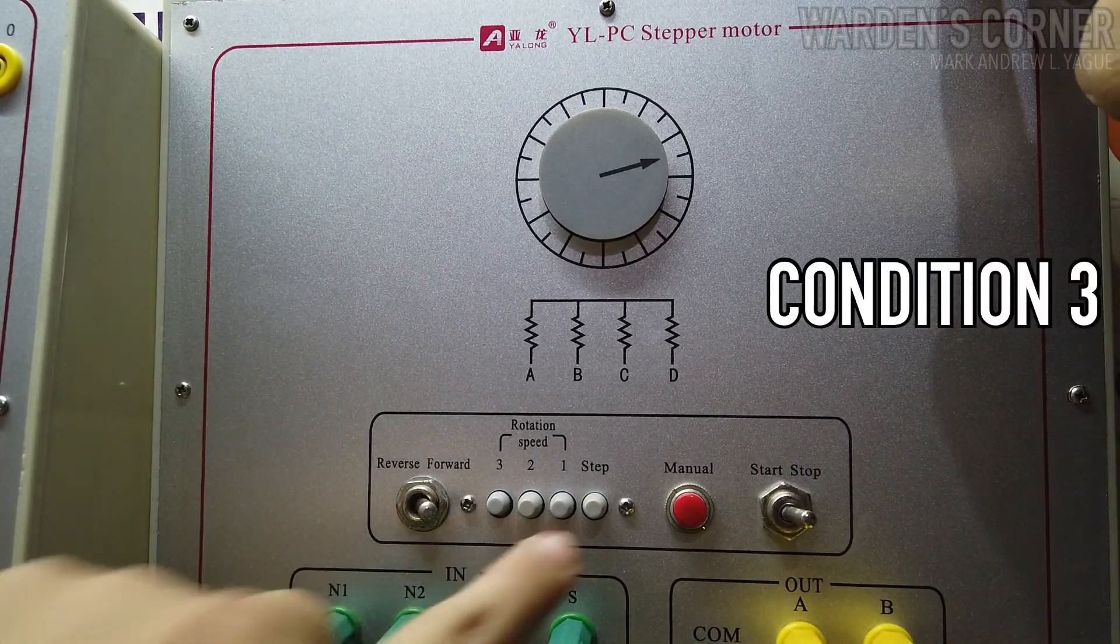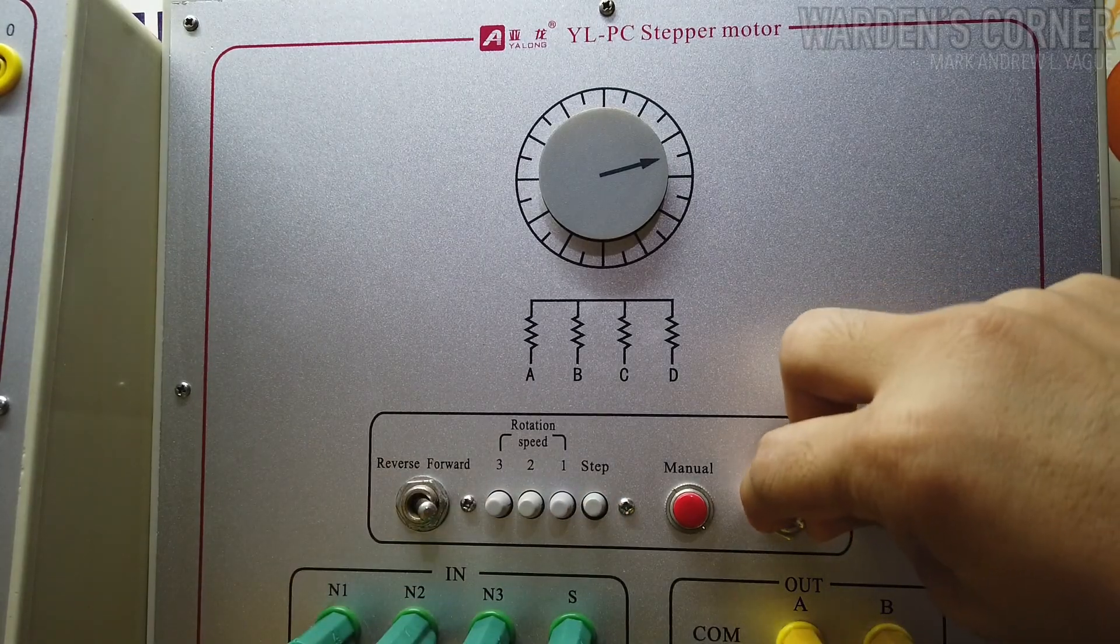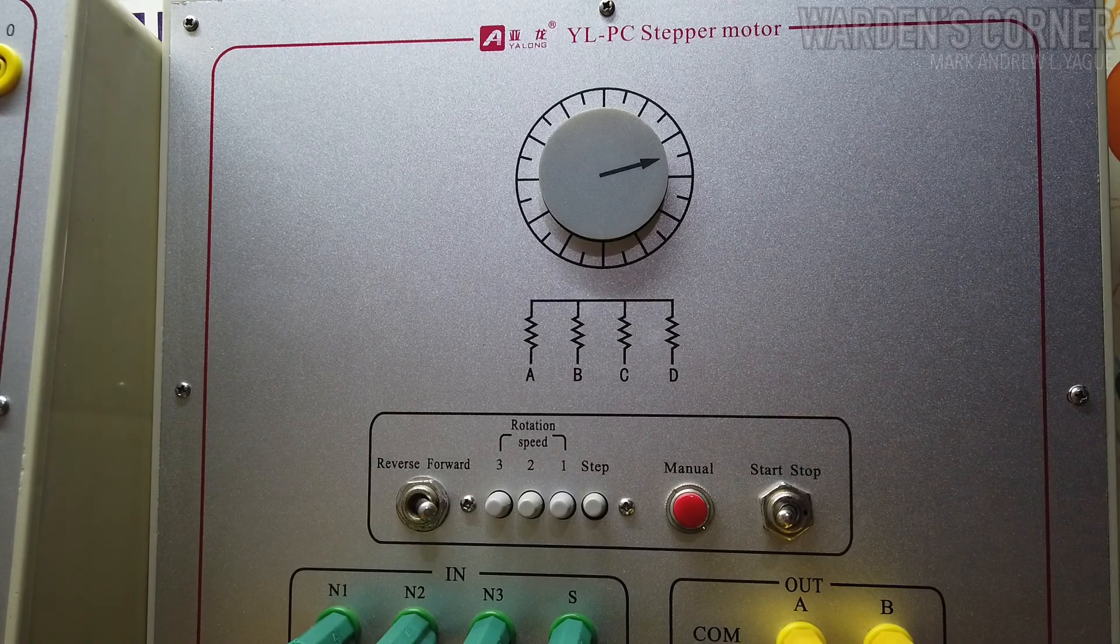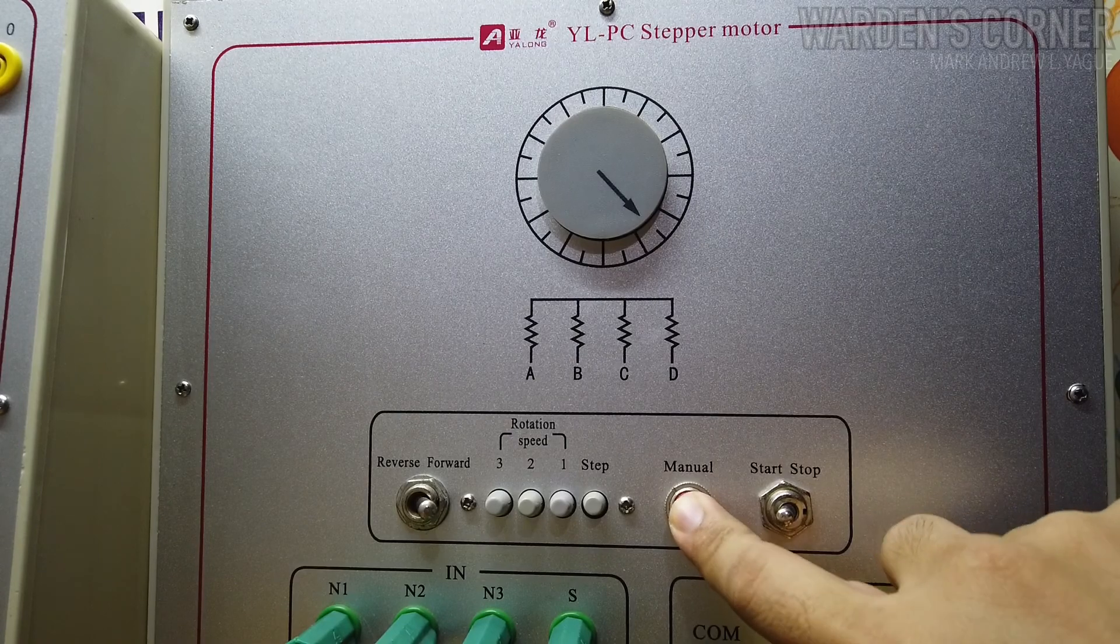And condition 3. In manual control operation, press step switch and start the program. Press manual switch on and off to manually activate the stepper motor.